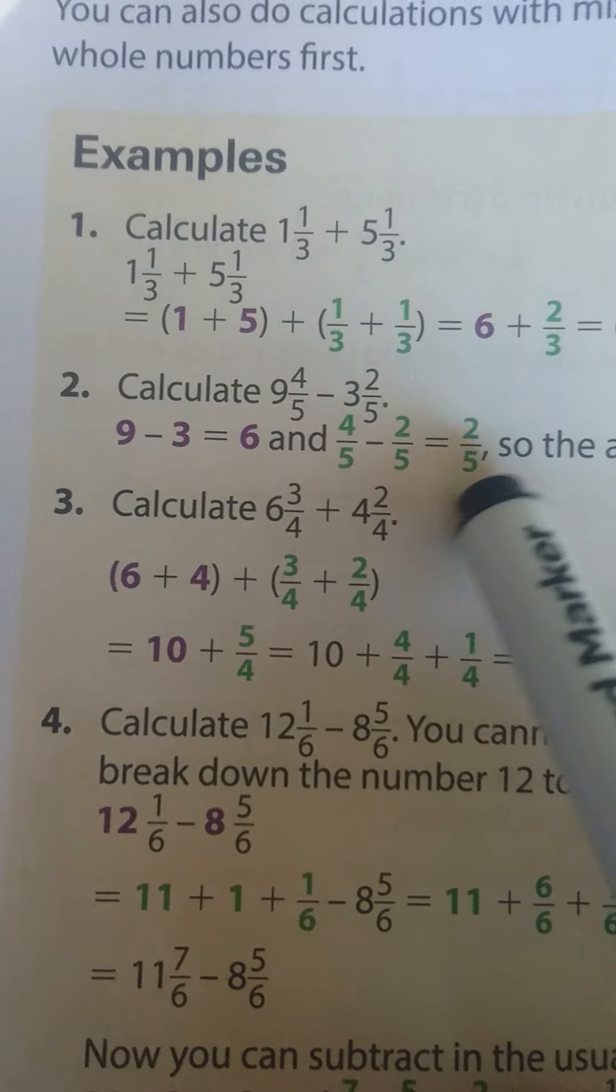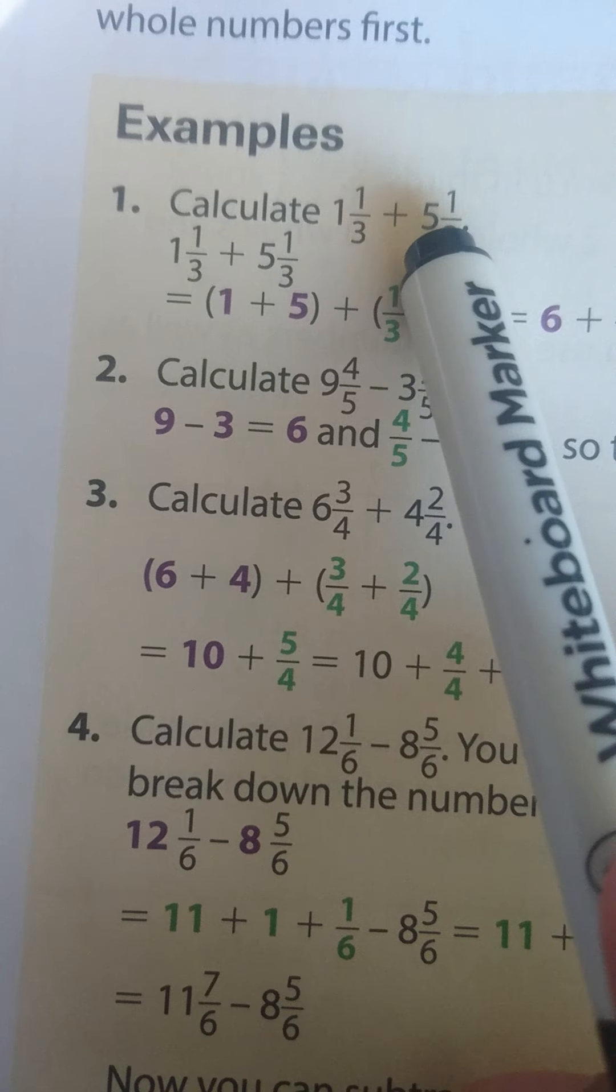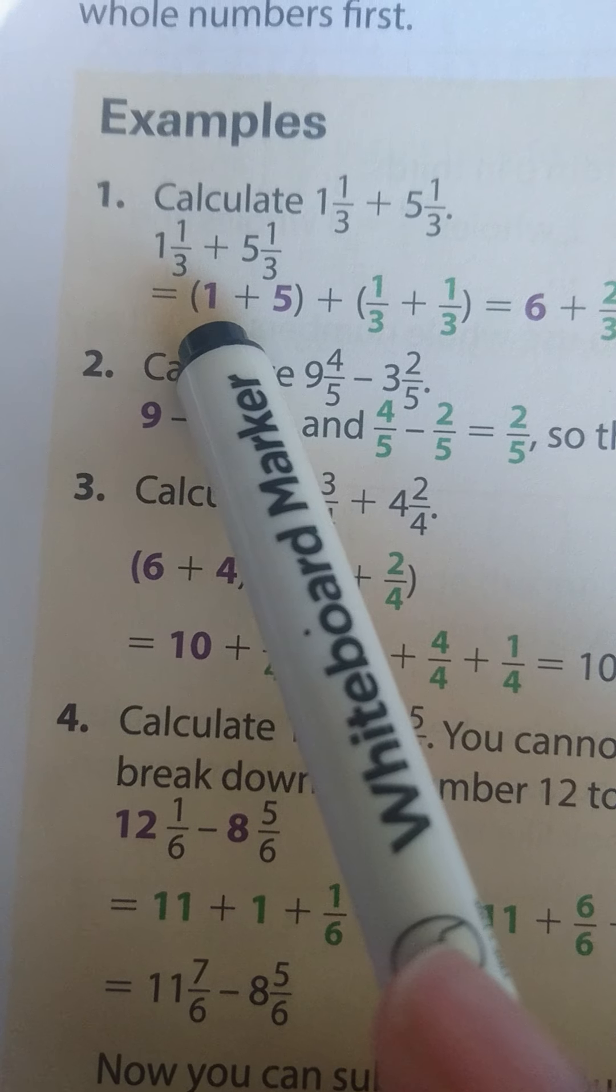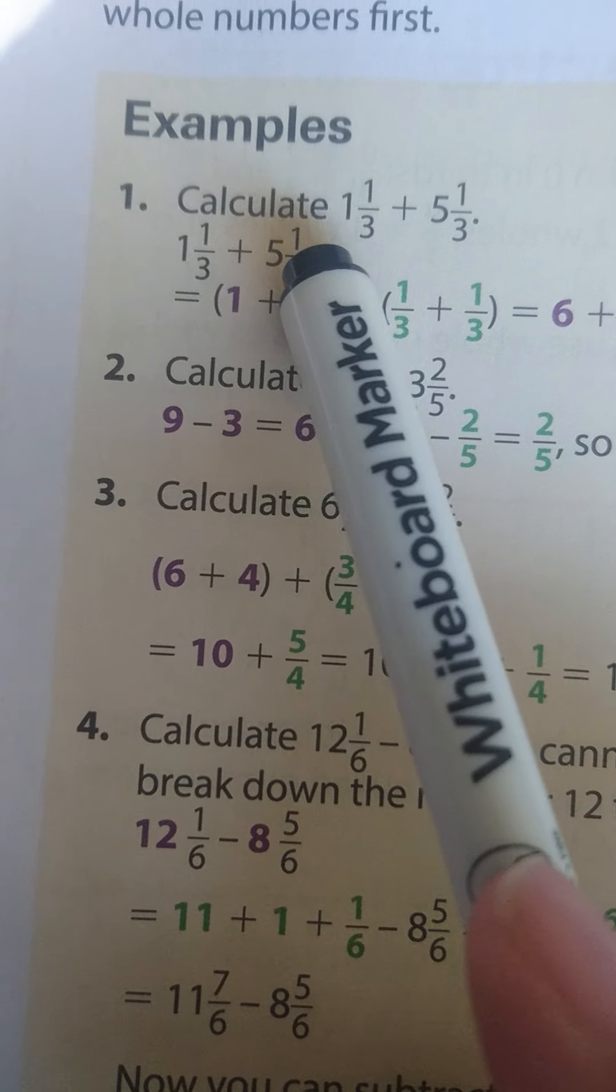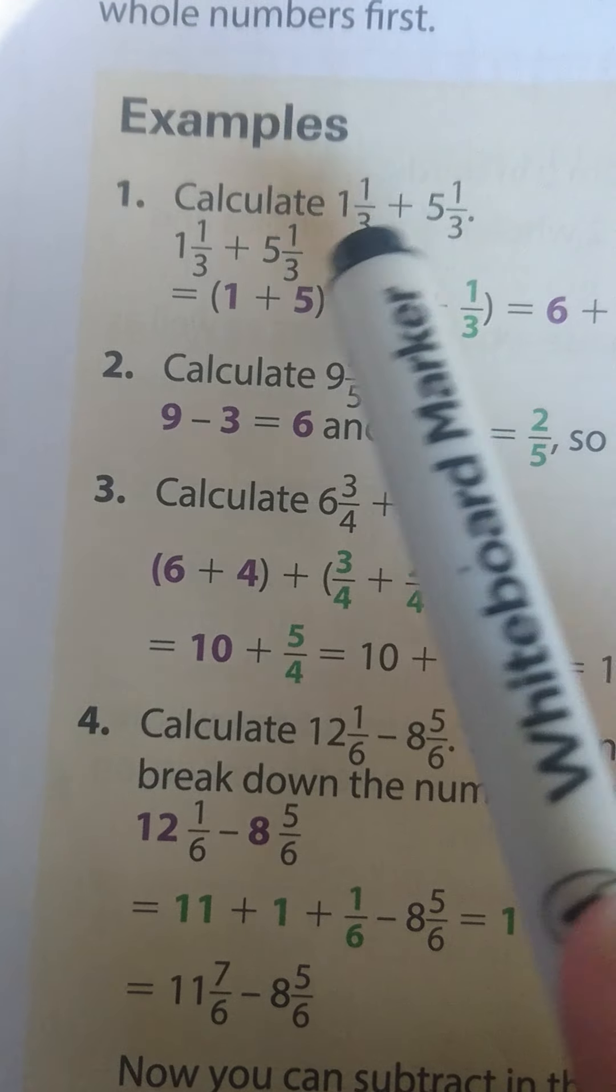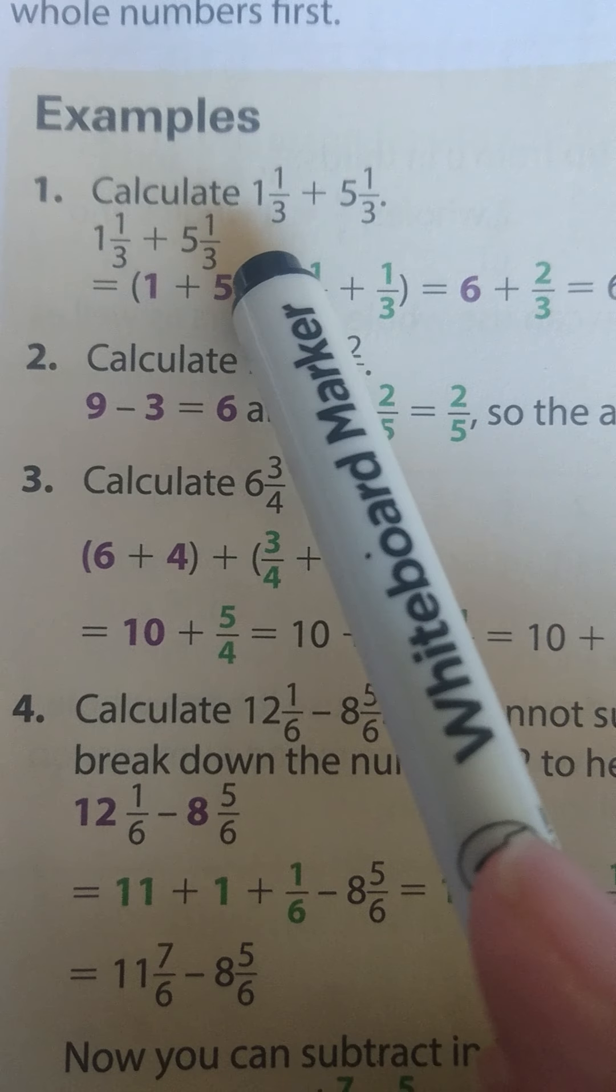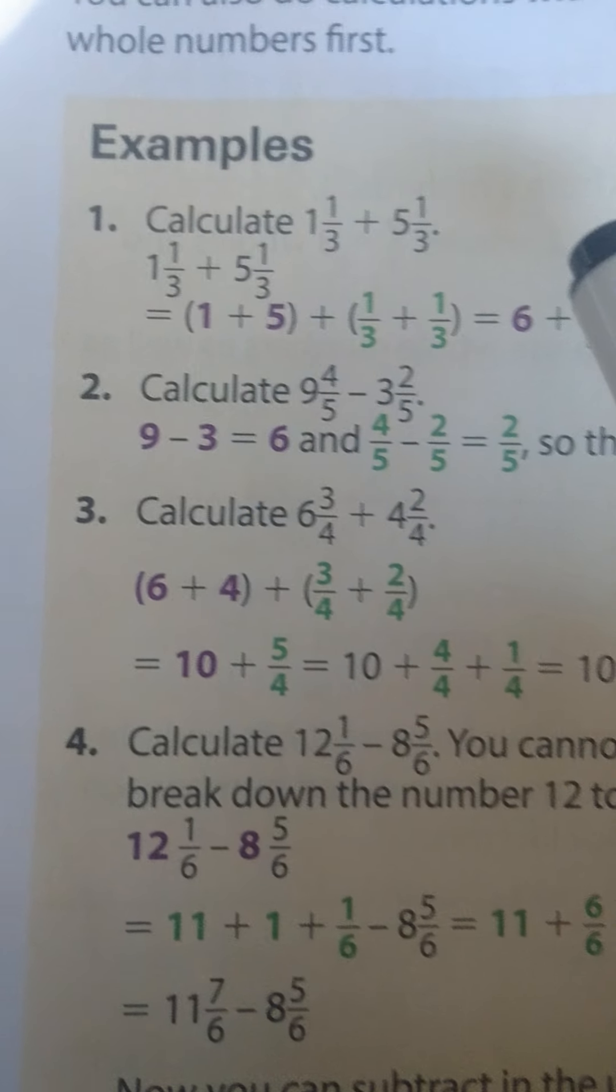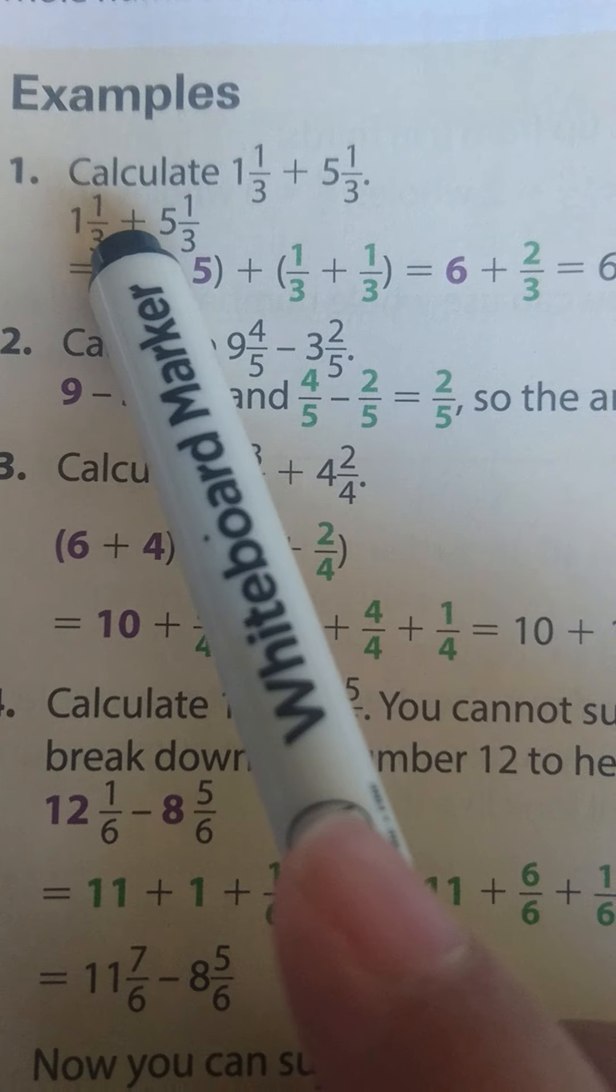It says calculate 1⅓ + 5⅓. So the first step is to calculate the whole numbers. In the first one the whole number is 1 and in the second one the whole number is 5. So you're first going to say 1 + 5. And it's good to put it in brackets so that you don't get confused, and it is separated from the fraction so we need to put it in brackets.